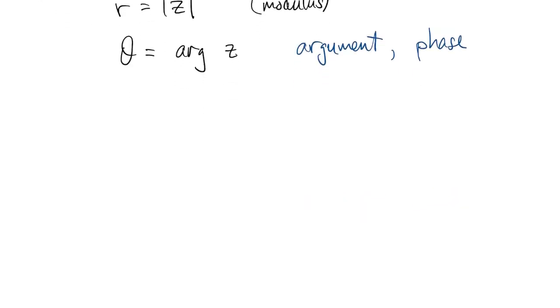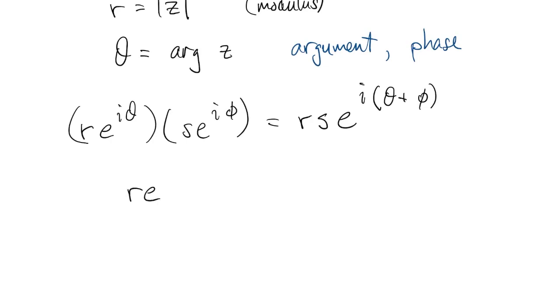Polar form makes multiplication very simple. These are still exponential functions, so we can add the exponents together. Division, very similar. The real parts divide, or I'm sorry, the magnitudes divide, and then you subtract off the angle of the denominator.